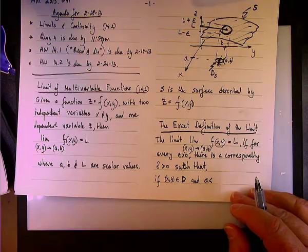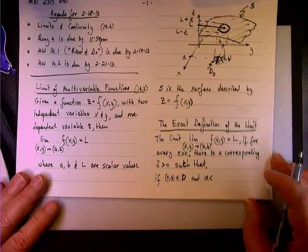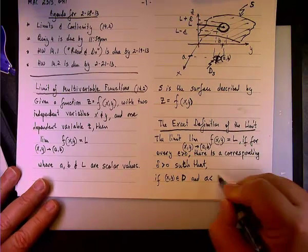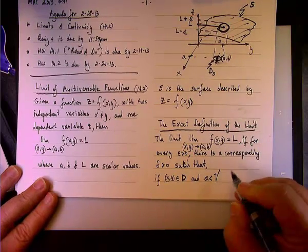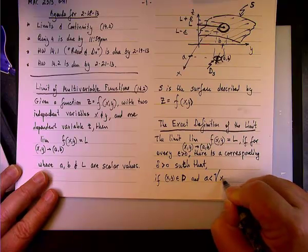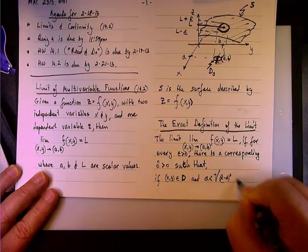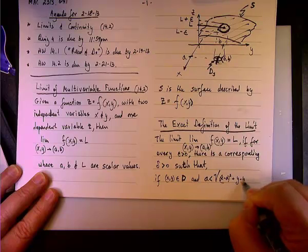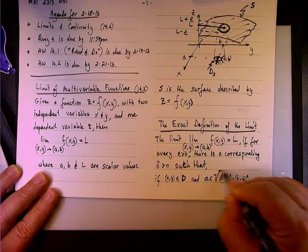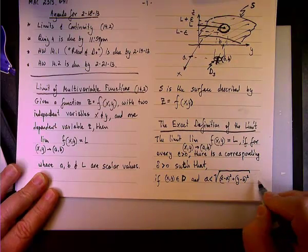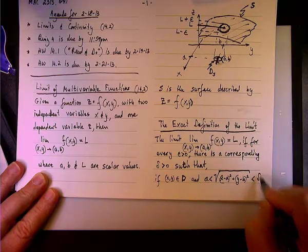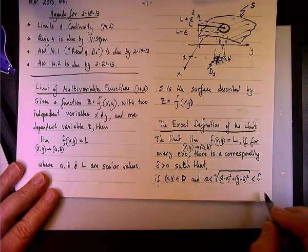we're supposed to have the absolute value of x minus a is less than delta, right? But in this case we have two variables, so we're going to say that the square root instead of the absolute value of x minus a squared plus y minus b squared is less than delta.